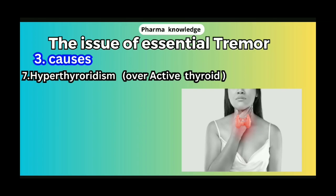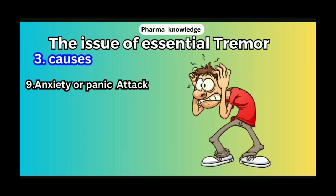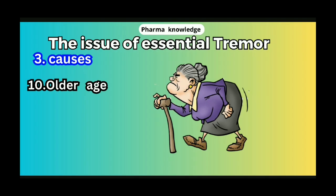Other causes include Hyperthyroidism, Liver and Kidney Failure — if you have kidney failure or liver disease, you can develop tremors. Anxiety — a sudden attack or sudden shock — can also cause tremors. Old age is another contributing factor.